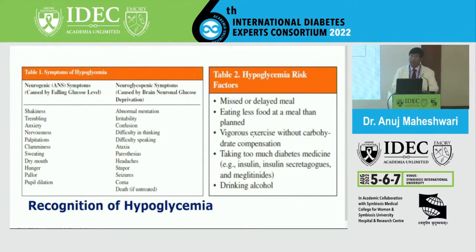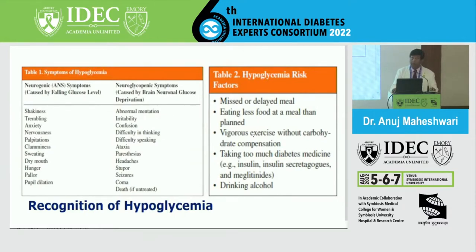Hypoglycemia risk factors are well known: missing or delaying meals while taking diabetes medication, eating less food than required - which frequently happens in elderly individuals and diabetic children - vigorous exercise without carbohydrate compensation, taking too much diabetes medicine, and drinking alcohol, which is one of the very important causes of hypoglycemia.